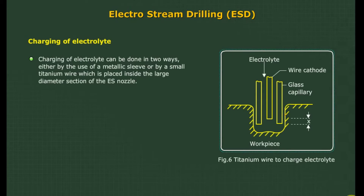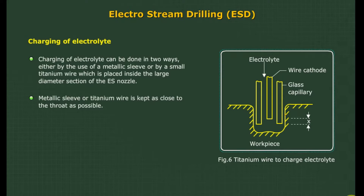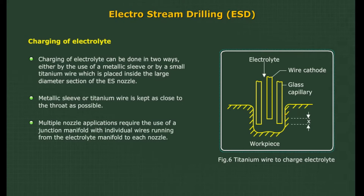Charging of electrolyte can be done in two ways: either by the use of a metallic sleeve, or by a small titanium wire placed inside the large-diameter section of the ESD nozzle. The metallic sleeve or titanium wire is kept as close to the throat as possible. Multiple nozzle applications require the use of a junction manifold with individual wires running from the electrolyte manifold to each nozzle.